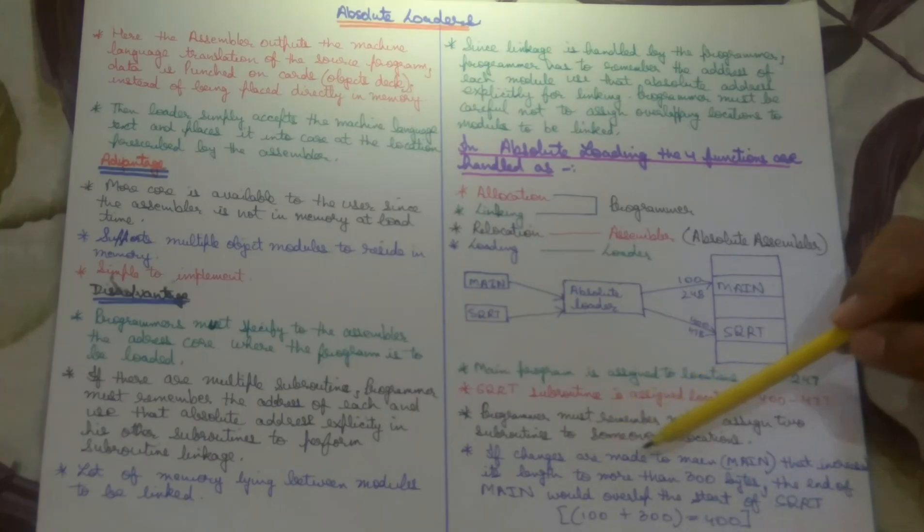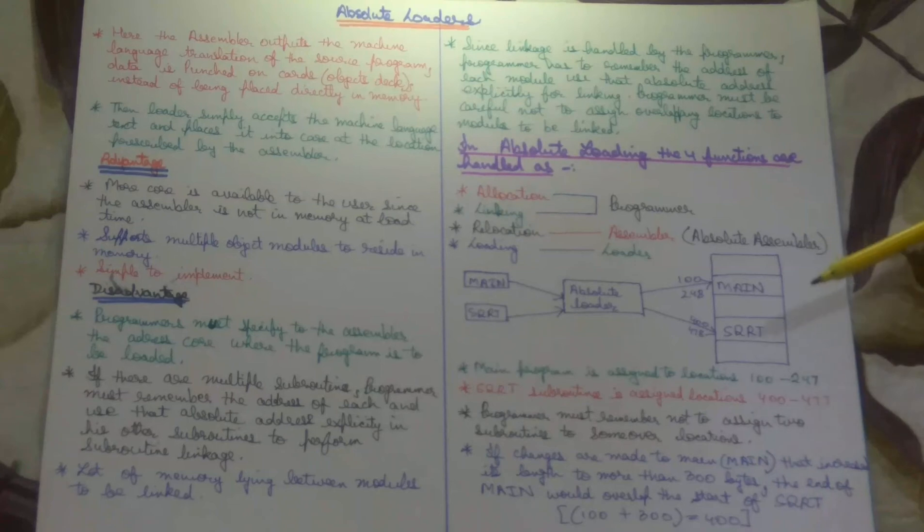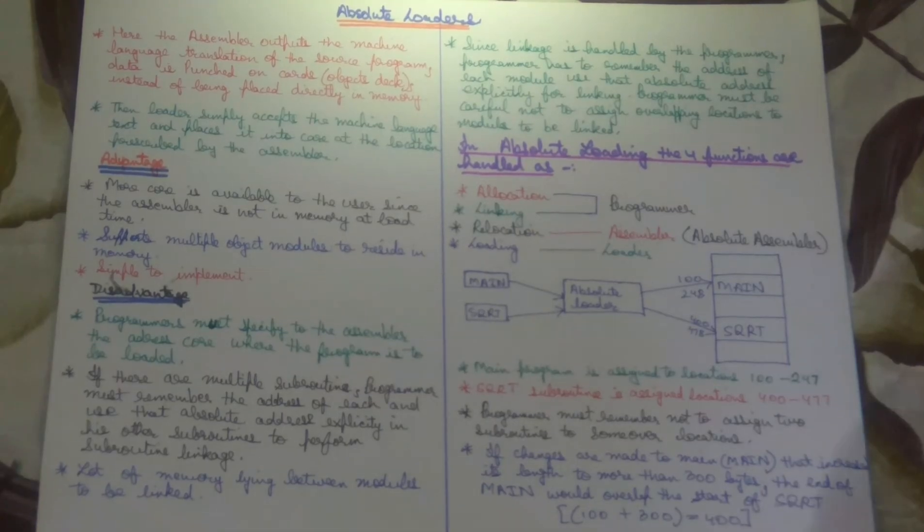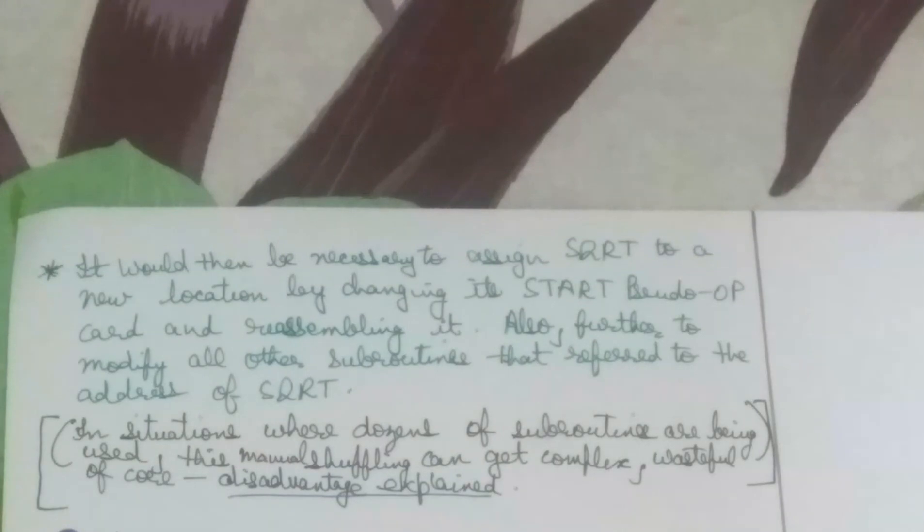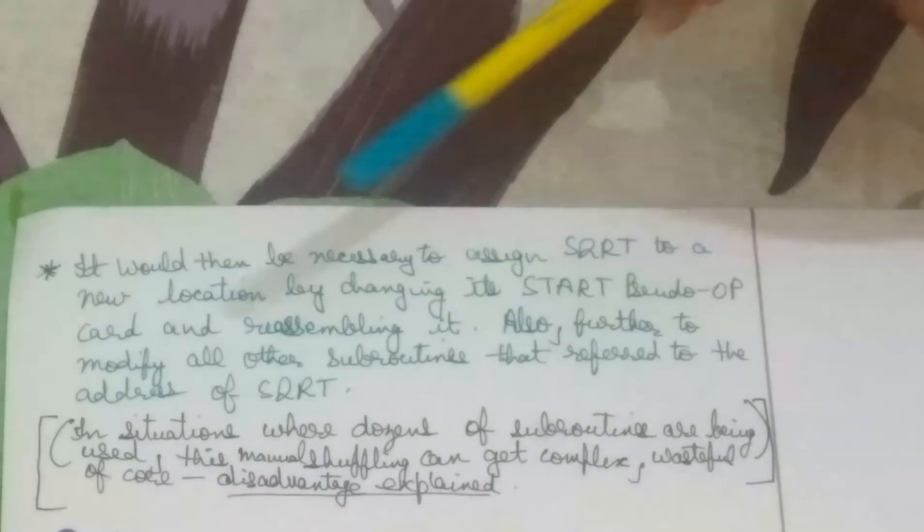Now suppose changes in the main method that increased its length. Suppose you had written the main method, now you have changed something in the main method which is why the main method length has increased. Now it has increased its length to more than 300 bytes. Now 300 bytes starting from 100 will reach 400, which means that the end of main method will overlap with the start of SQRT. The main method will overlap the start of SQRT.